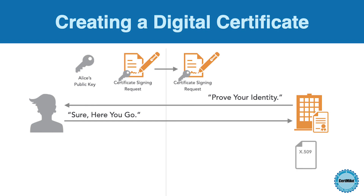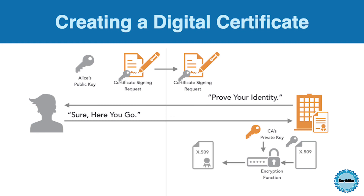Once the CA is satisfied that the sender is legitimate, it removes the public key and identity information from the CSR and puts it into the format of an X.509 certificate. The CA then uses its private key to place the CA's digital signature on the digital certificate and sends that certificate back to the requester.